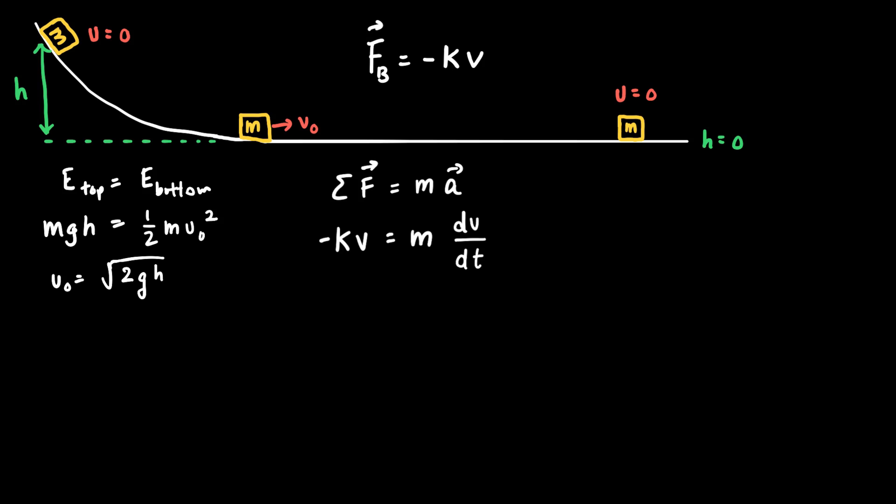This is useful because I can use the separation of variables technique to integrate both sides and arrive at an equation for the velocity as a function of time. I'll divide both sides by m, multiply both sides by dt, and divide both sides by v. What we're left with is: minus k over m times dt equals 1 over v times dv.